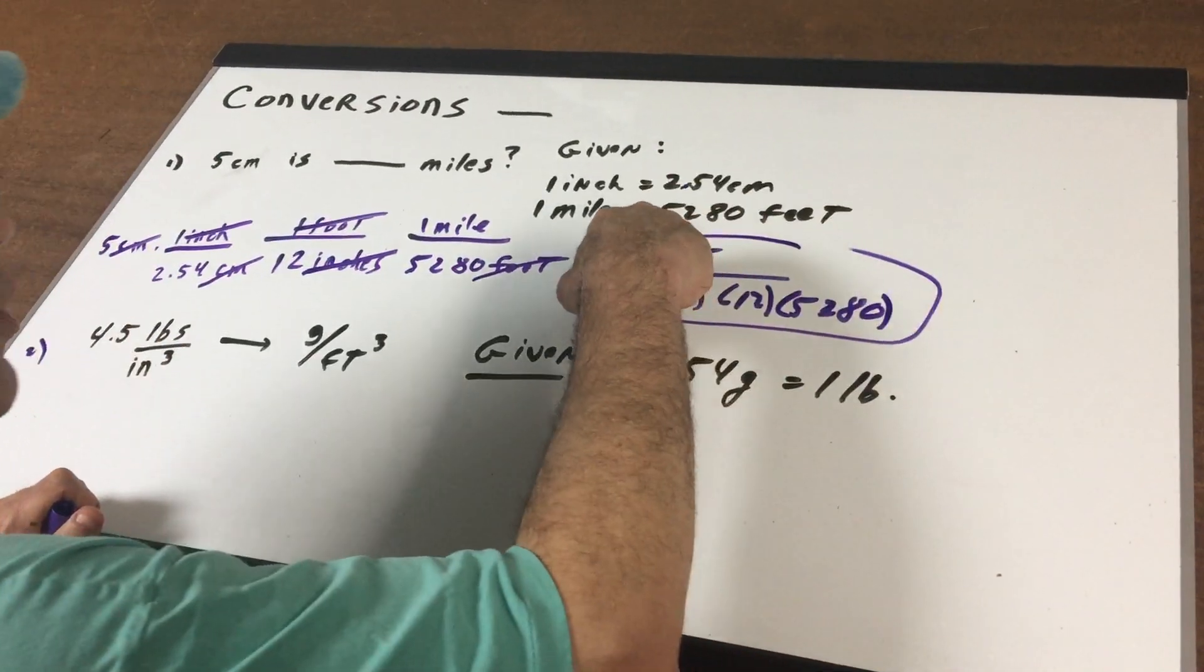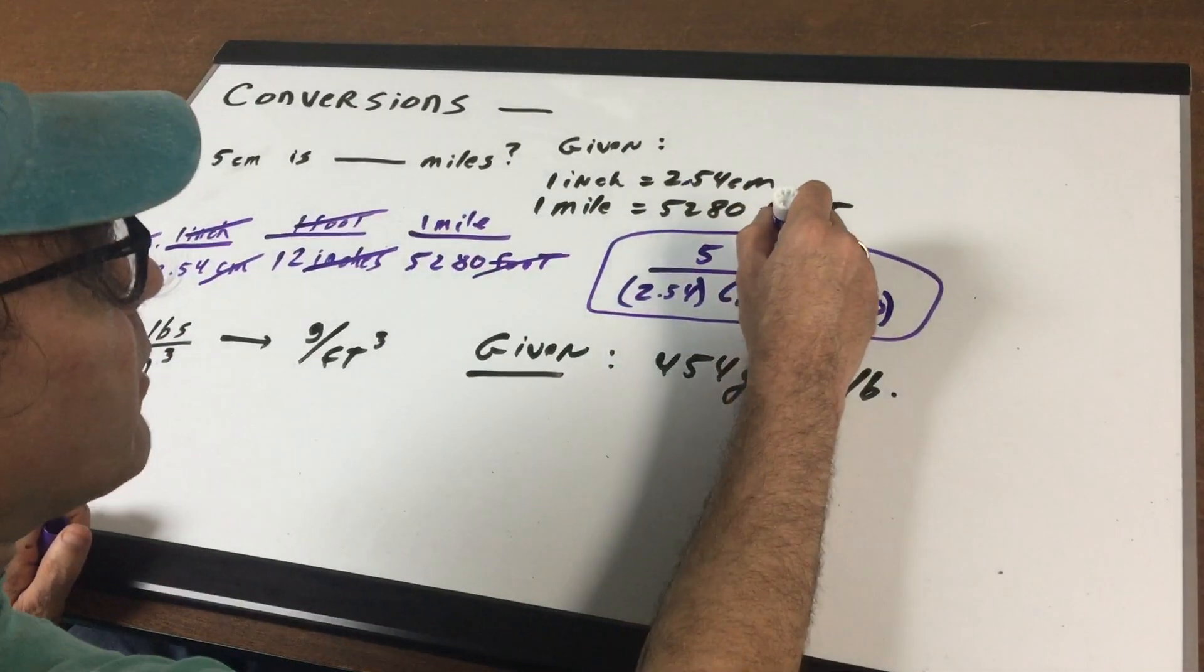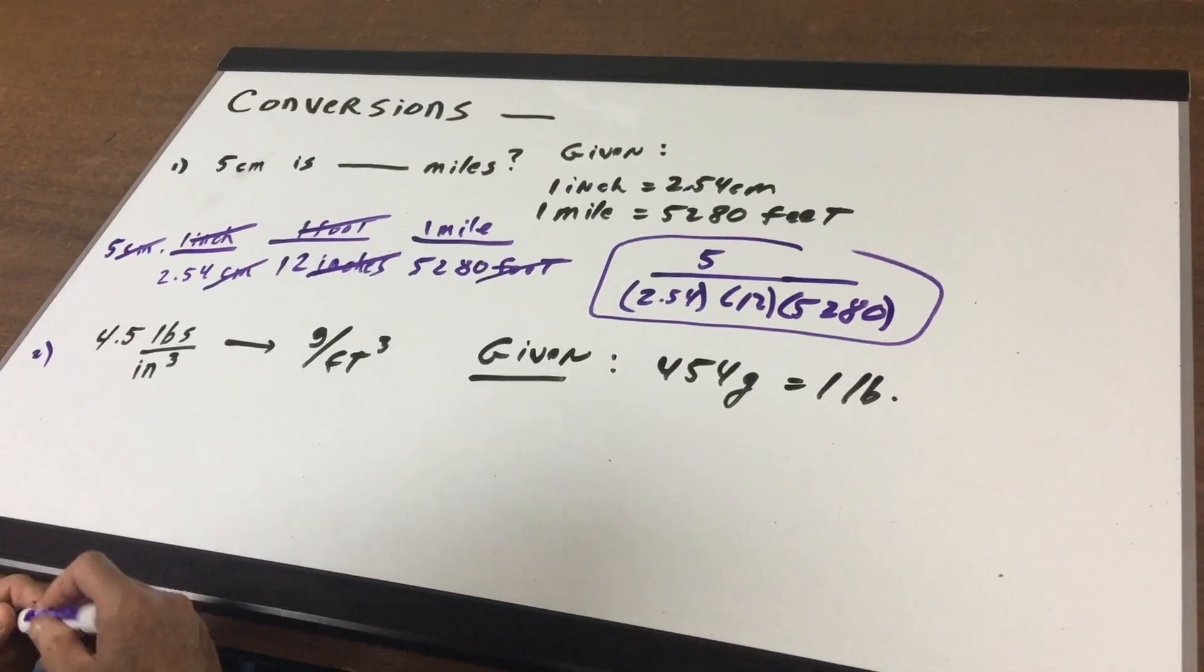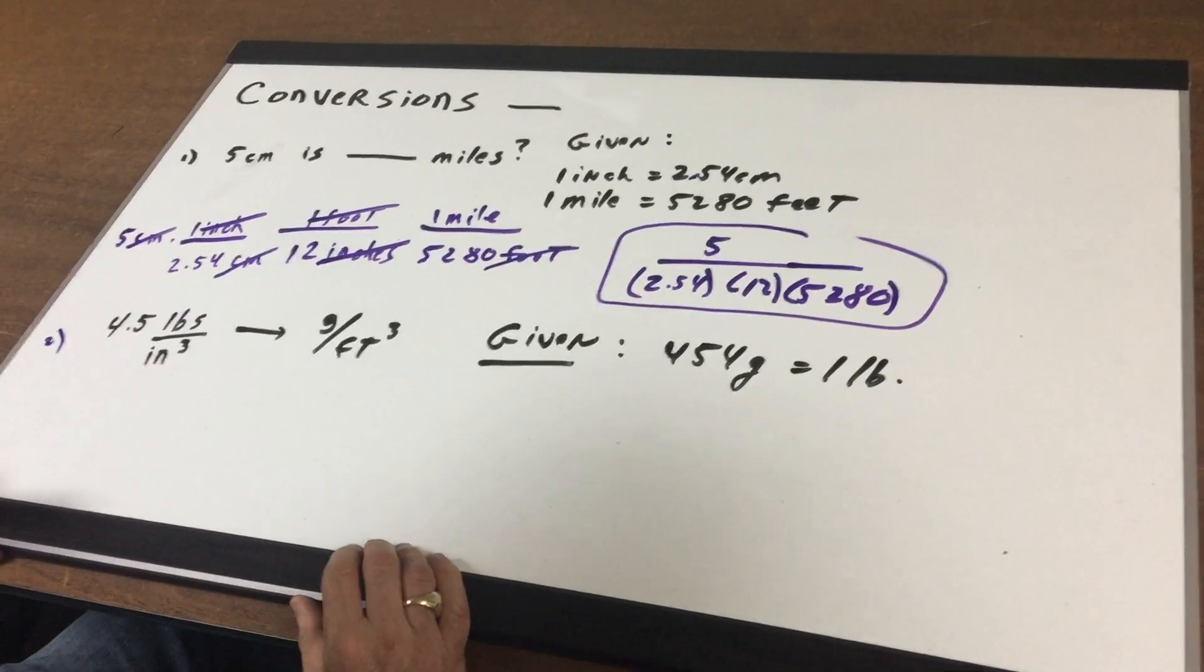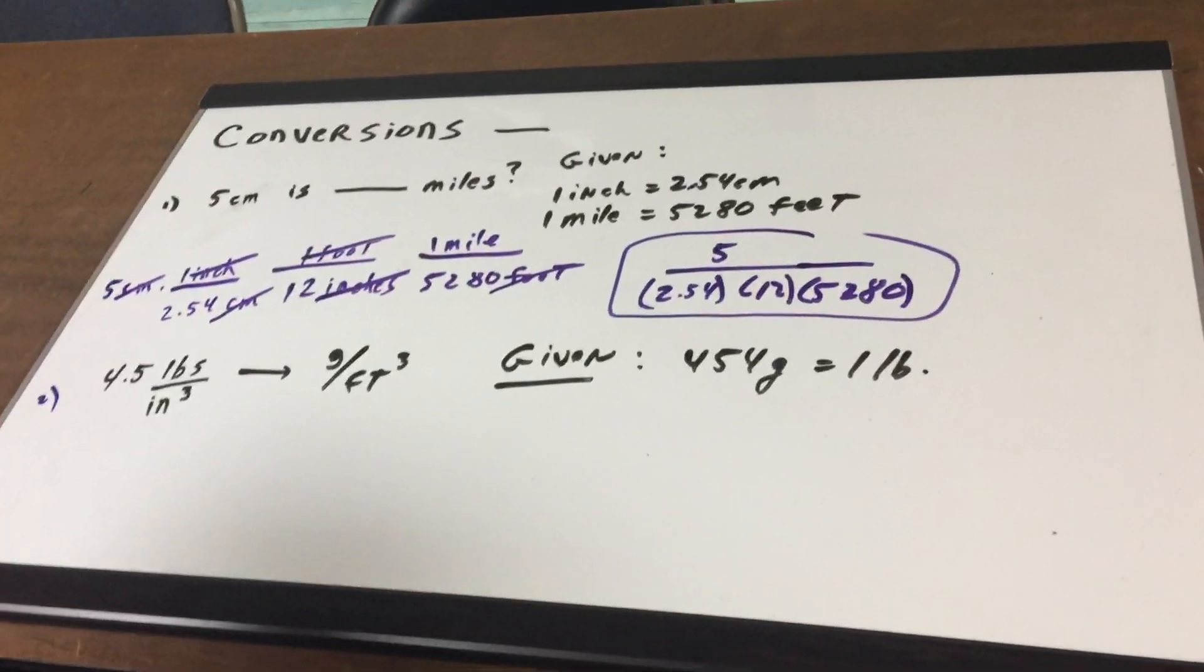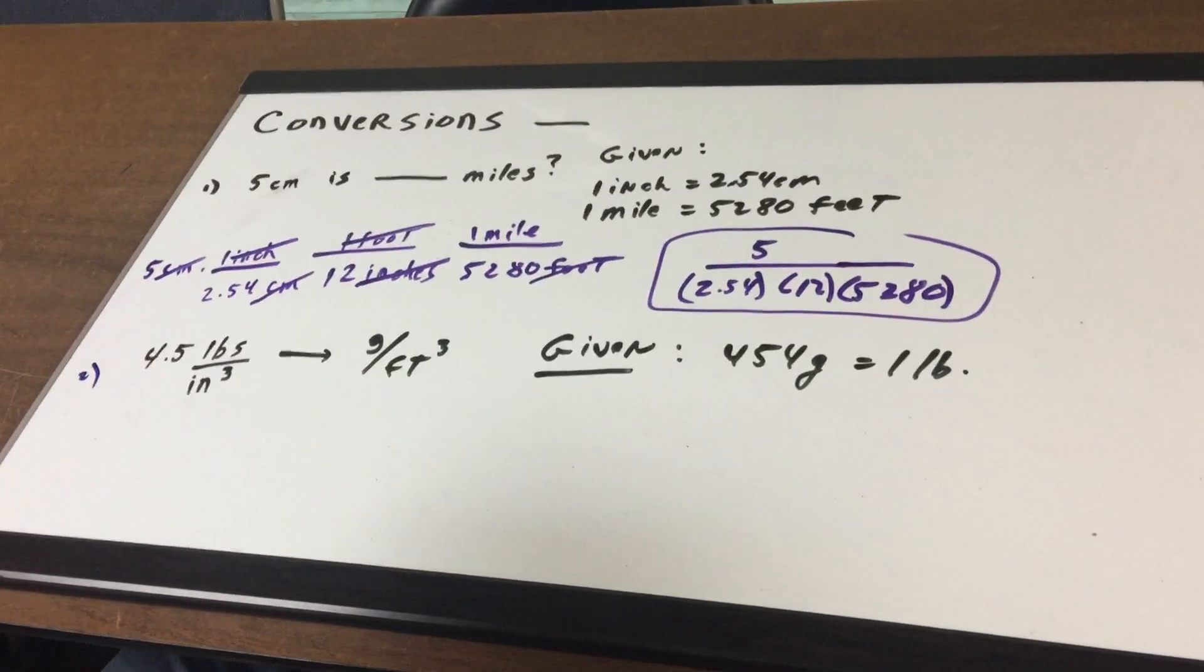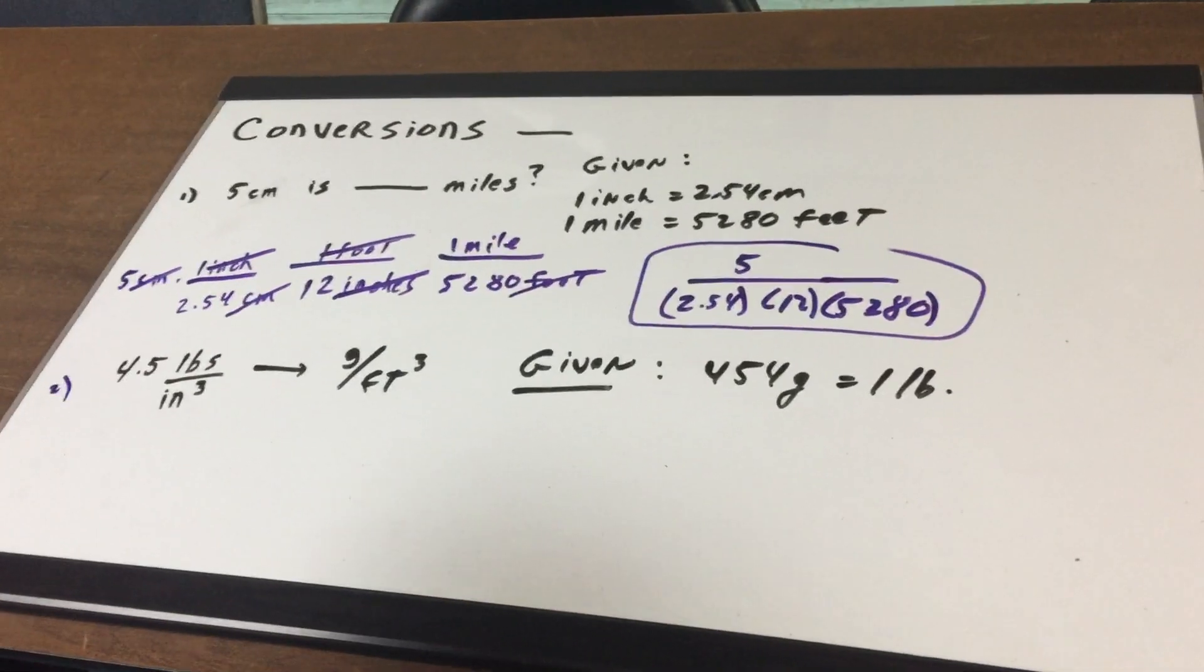So as you can see, we get 5 divided by 2.54 divided by 12 divided by 5280. And that's how many miles you get. Let's do a little more challenging one called the double conversion. I give you 4.5 pounds and I want to convert that into grams.